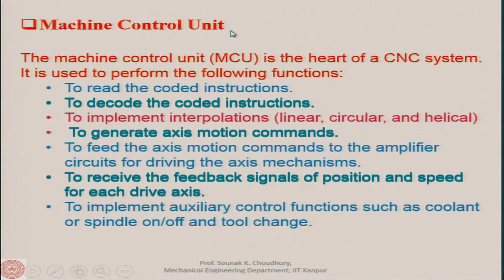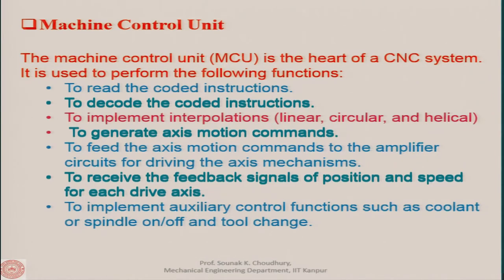The machine control unit is the brain or heart of the CNC system. It is used to perform the following functions: to read the coded instructions, to decode the coded instructions, and to implement interpolations. Implementing interpolation means deciding whether the tool has to move linearly or make a circular movement, according to the program.